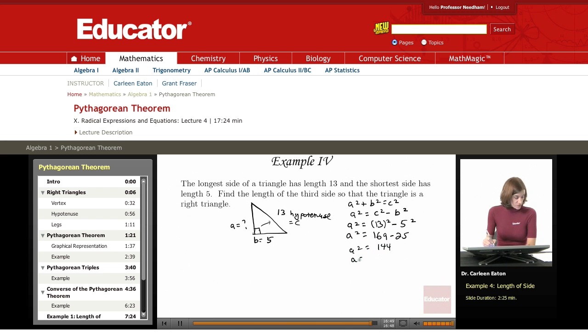Take the square root of both sides to get A equals 12. So in order for this triangle with a length of 13 for the longest leg and the shortest side having a length of 5, in order for this to be a right triangle, the third side would have to equal 12. If it did, then you'd have a 5, 12, 13 triangle, and that would satisfy the Pythagorean theorem.